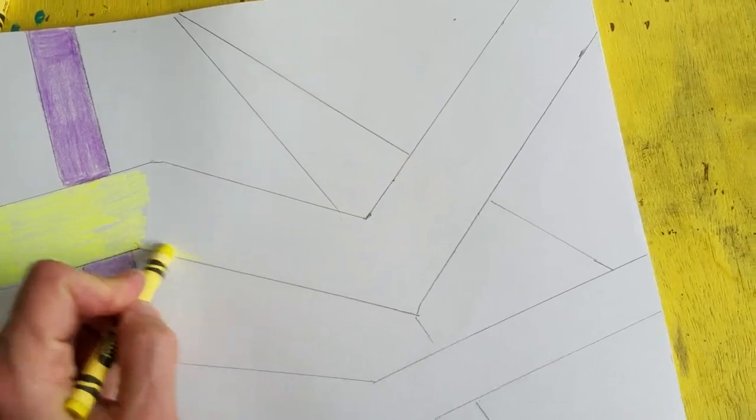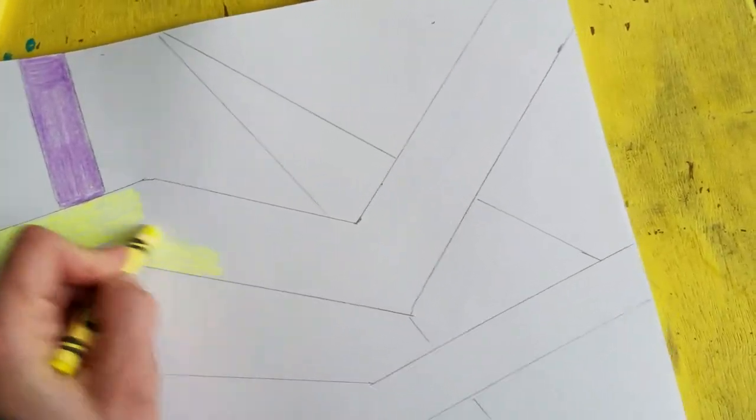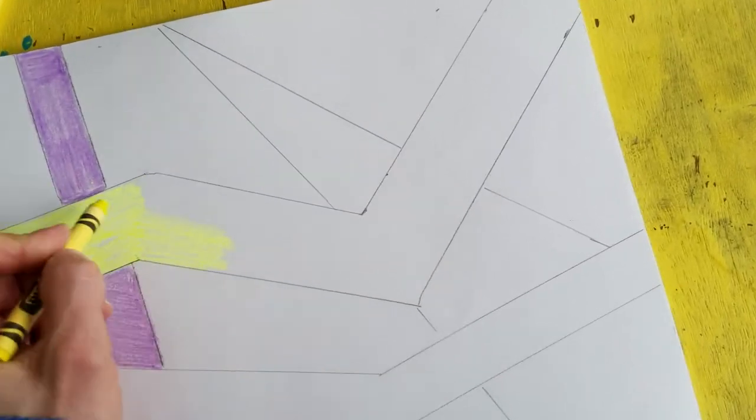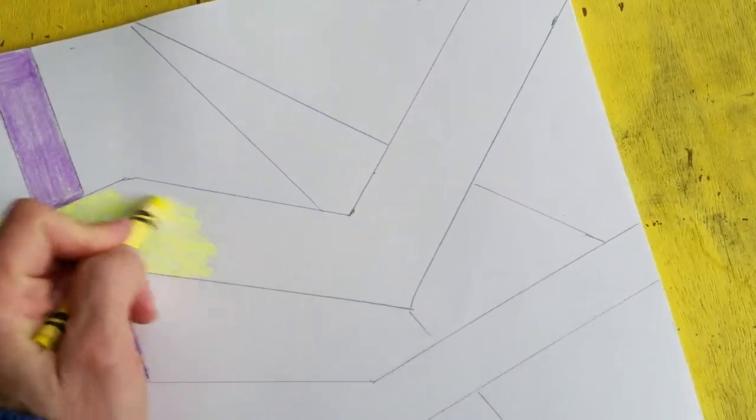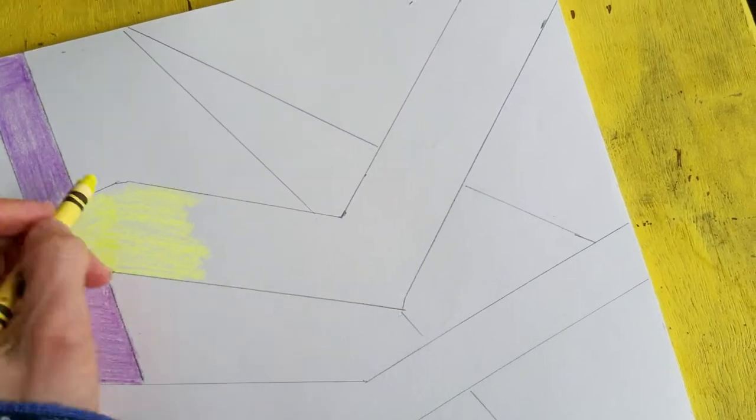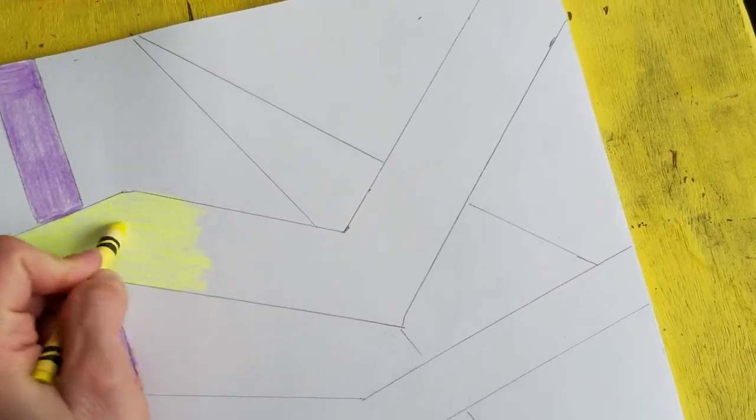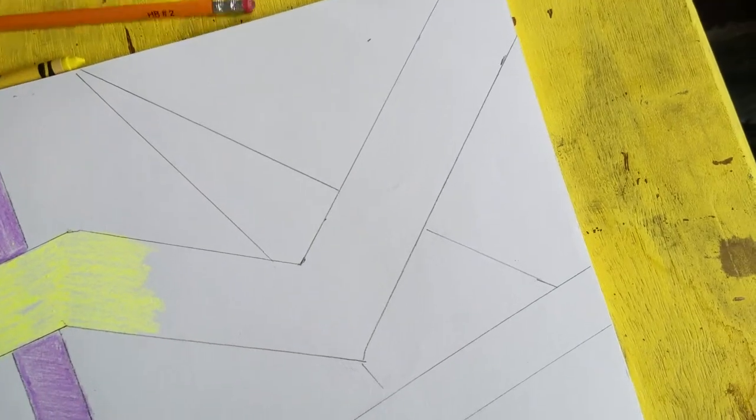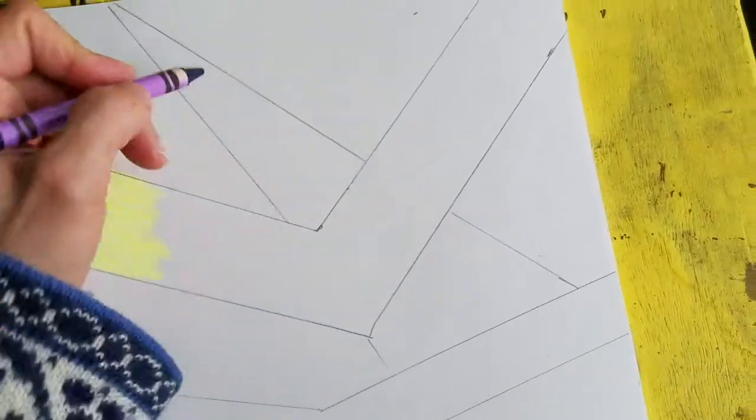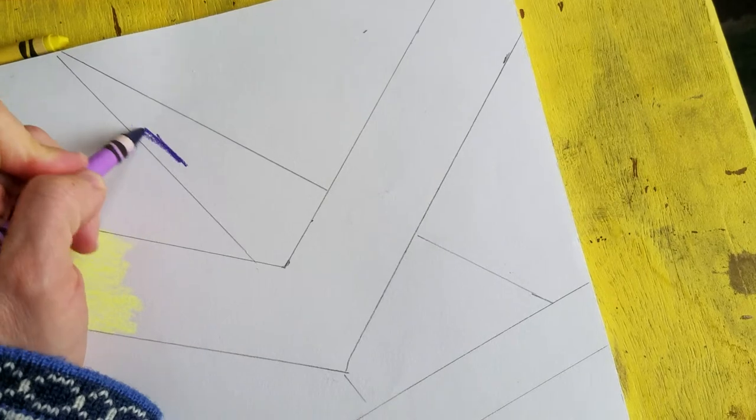And then what you want to do is, I would say take turns coloring your stripes and your patterns. Use yellow, then use a purple and use differing shades. So I used a lighter purple here and I'm going to do a darker purple.